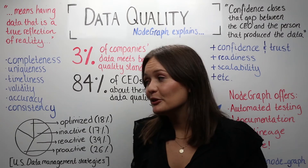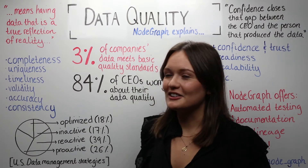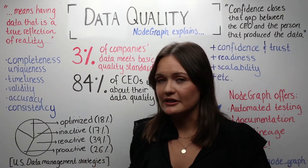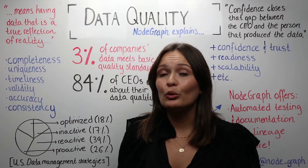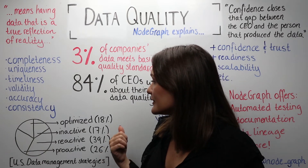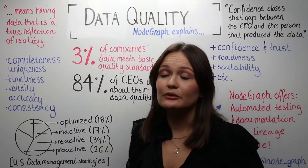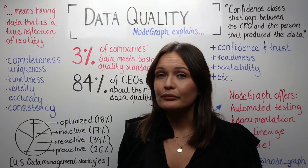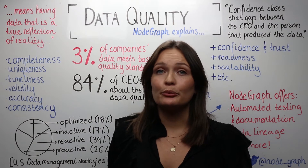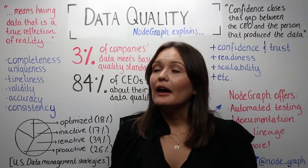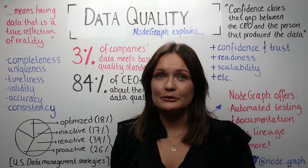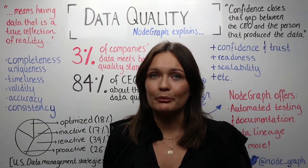And we do have this pie chart showing the use of data management strategies. Here we can see that more than half are having either an active or reactive strategy, about 26 percent are having a proactive strategy, and furthermore 18 percent are having an optimized strategy.